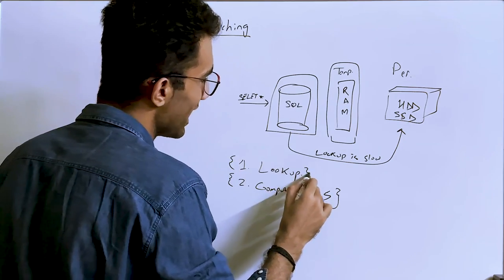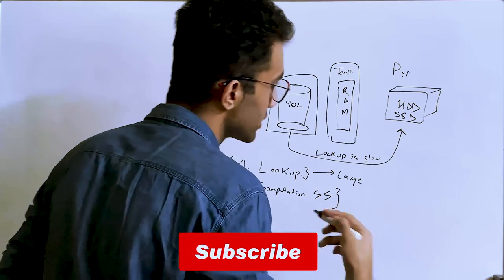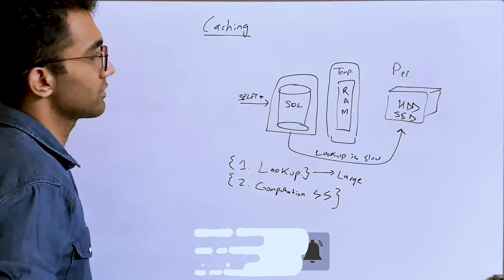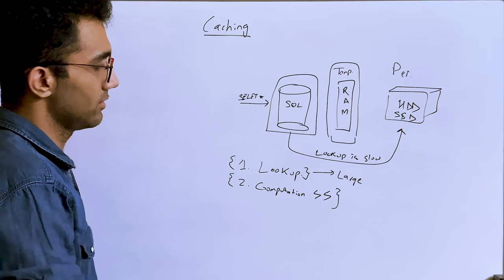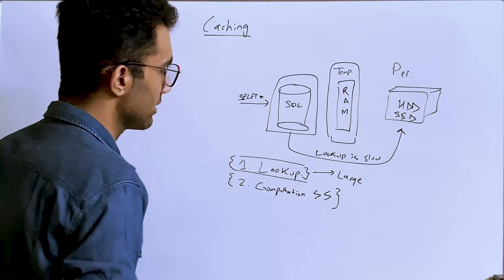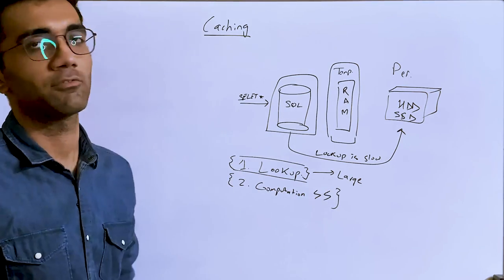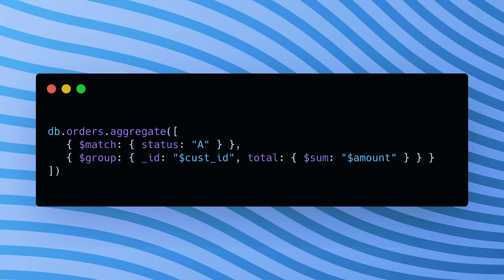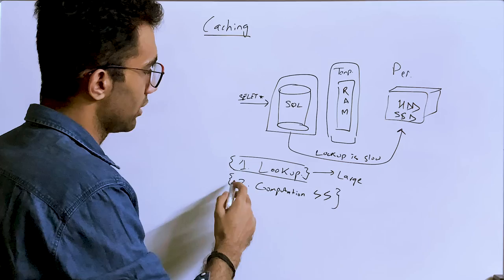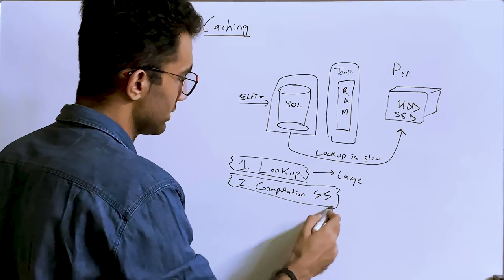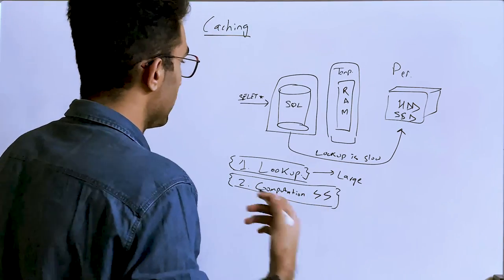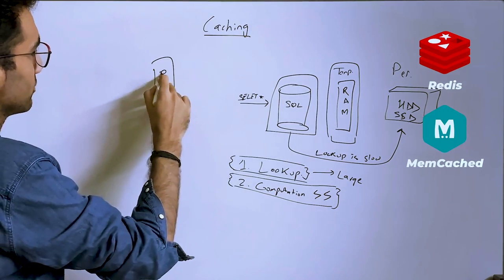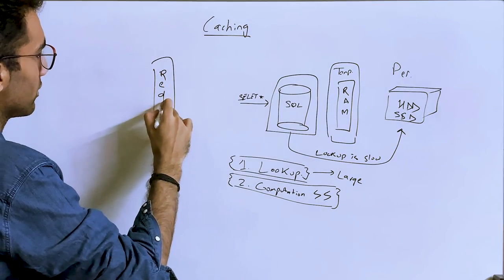The computation cost becomes more relevant if you have large data — tens or hundreds of thousands of rows or documents in a NoSQL database. Complex queries like MongoDB aggregate queries are much more computationally expensive than simple queries, so the computation argument is the main point there.